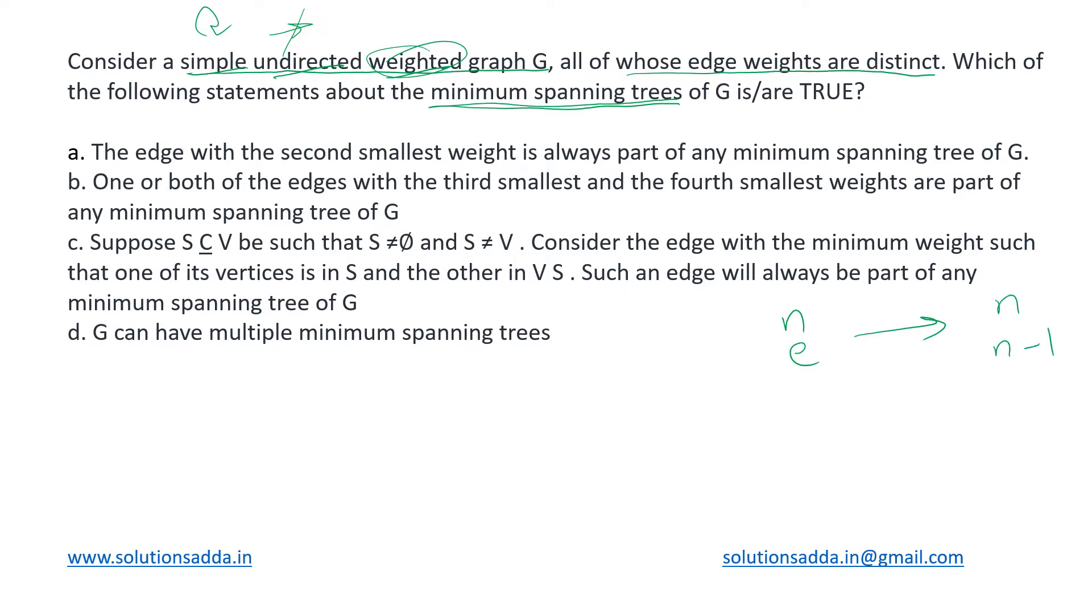And such that the sum of all of the edge weights will be minimum. Those are some of the properties of MST. And then depending upon the algorithm used, the way how we construct that MST differs. Let us have a look at the options. The edge with the second smallest weight is always part of any minimum spanning tree of G.